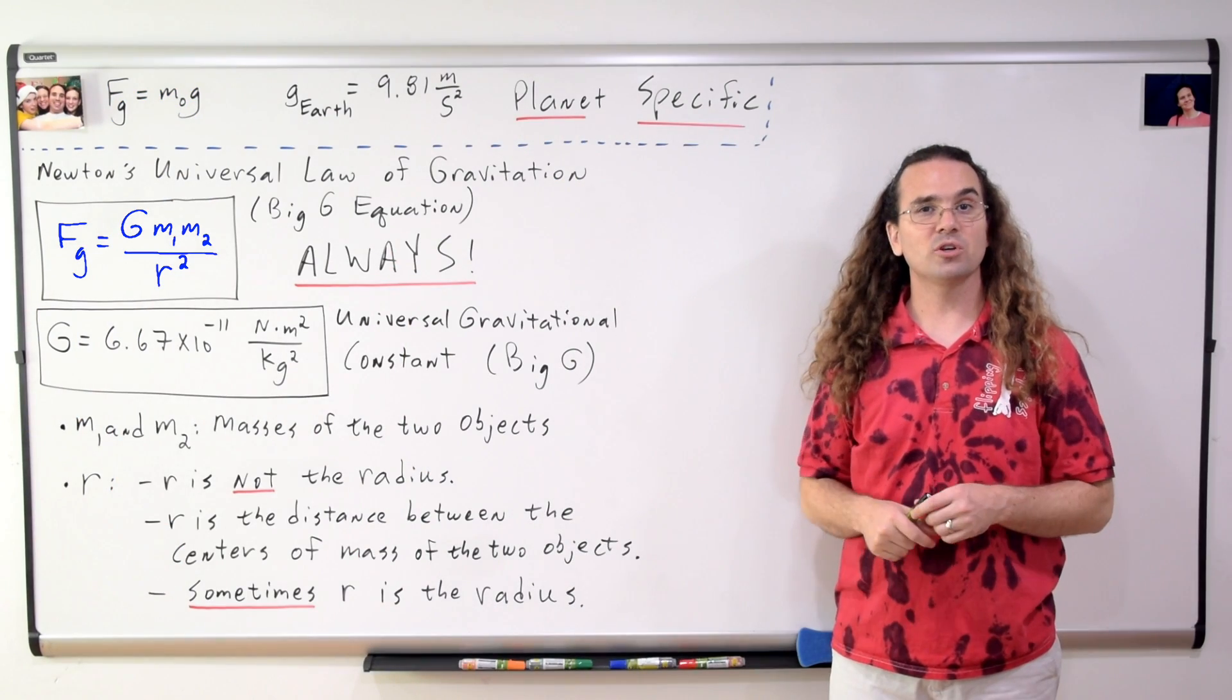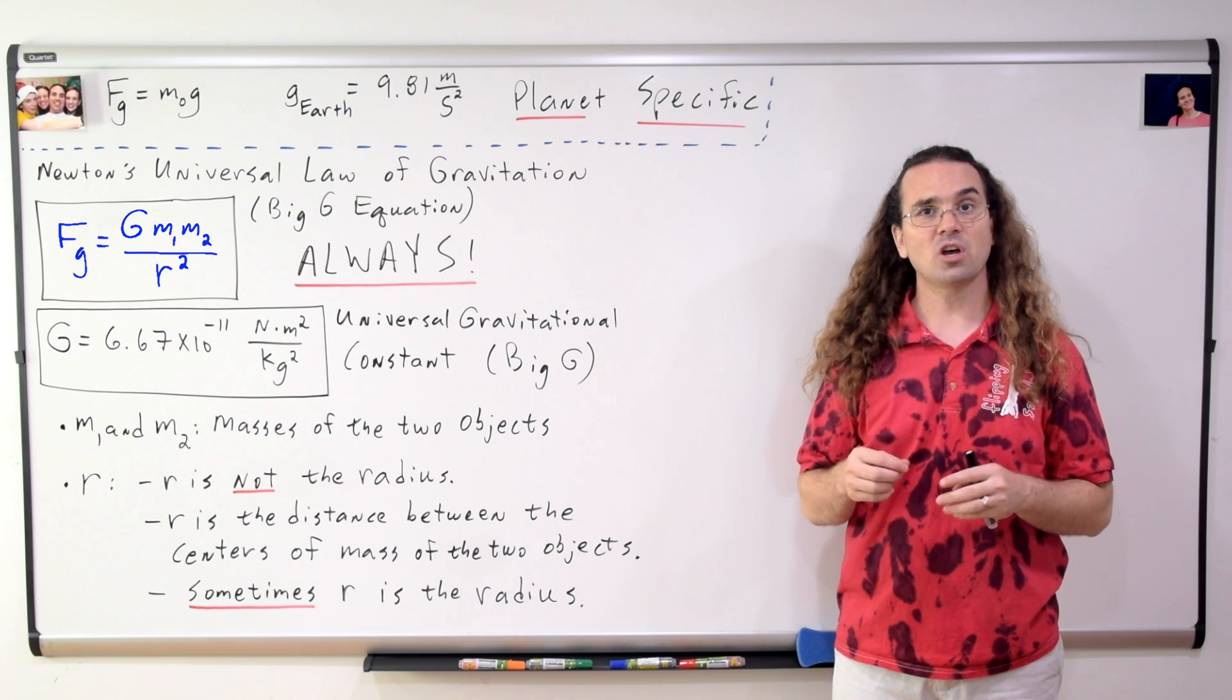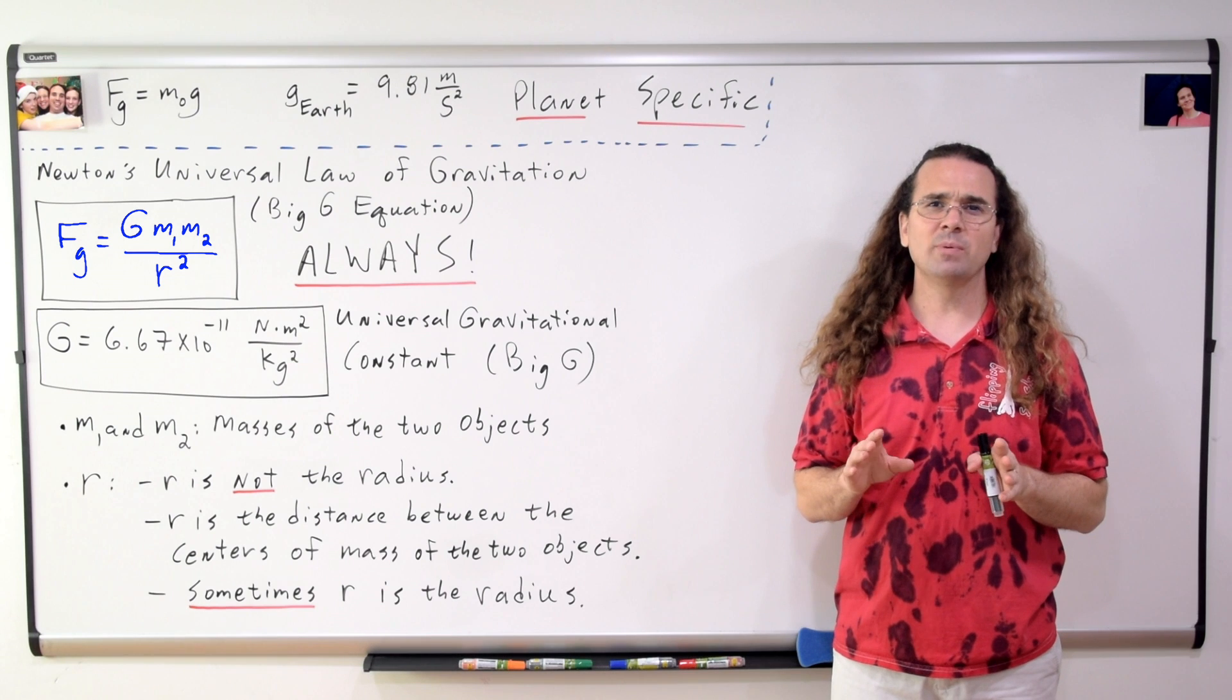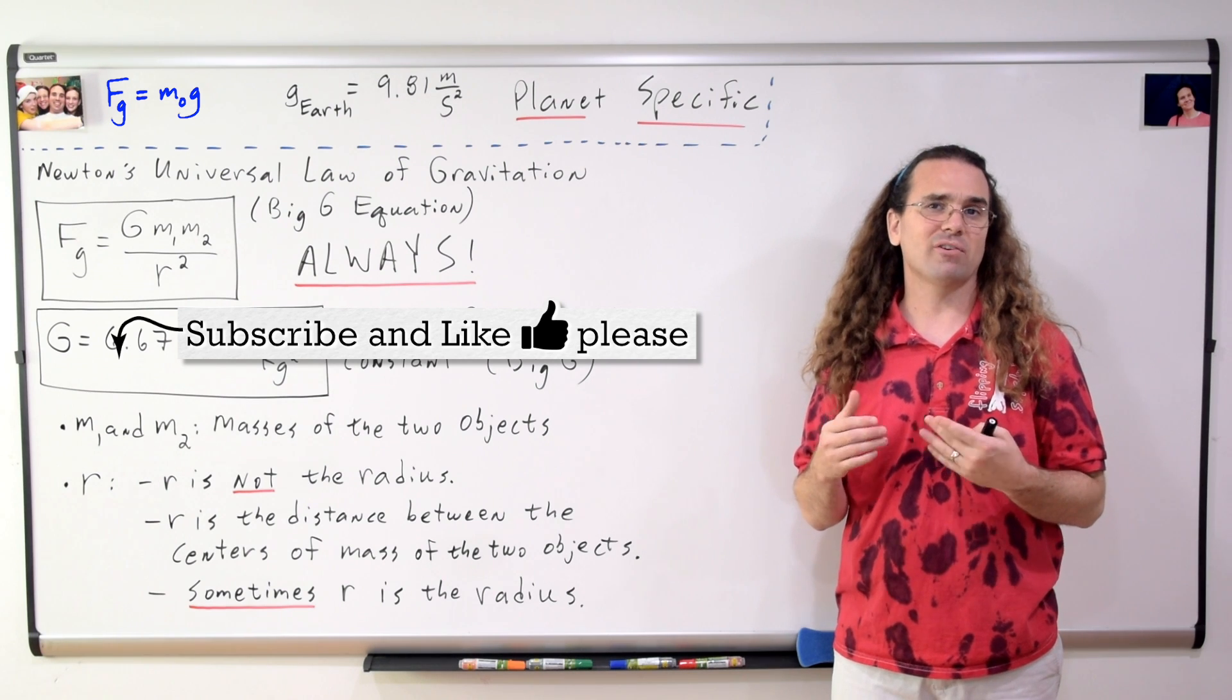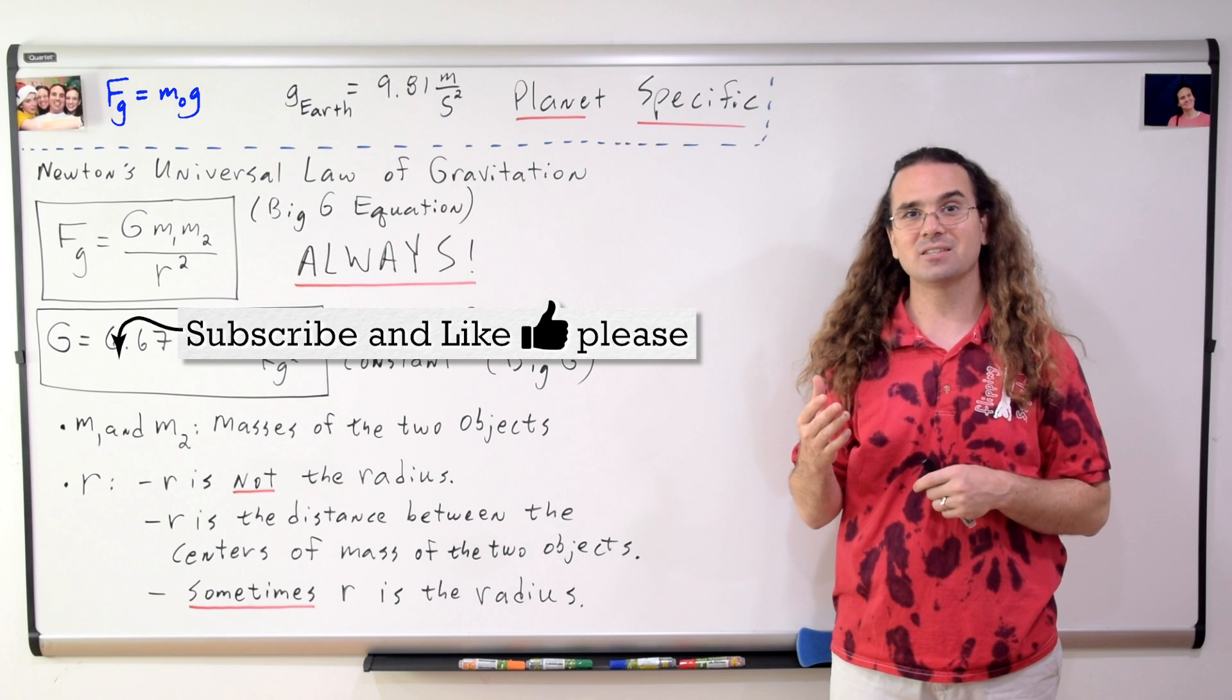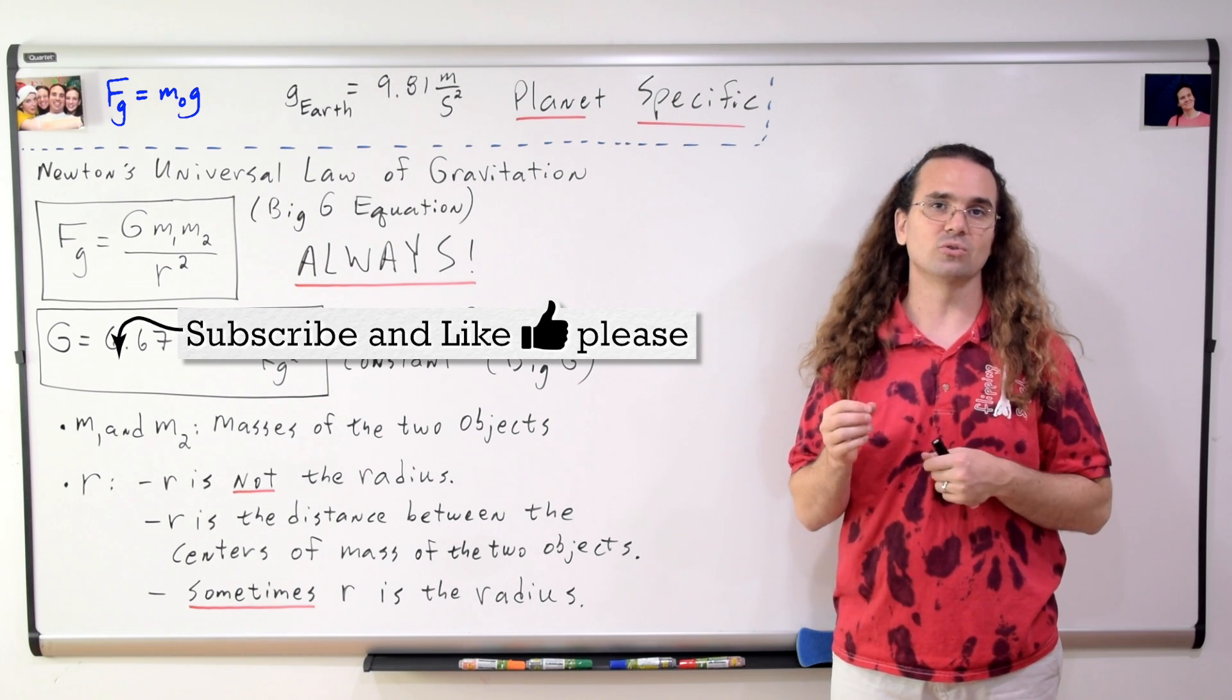Newton's universal law of gravitation is always correct. We can always use this equation to solve for the force of gravity which exists between any two objects. Which means we don't actually need the equation force of gravity equals object mass times acceleration due to gravity, however, in recognition that we often need to determine the weight of objects here on planet Earth, we have the shorter, much easier to use equation.